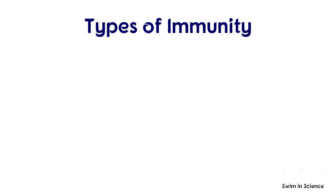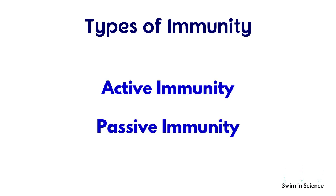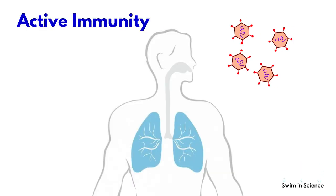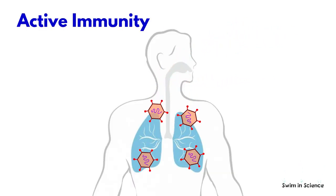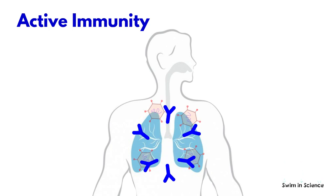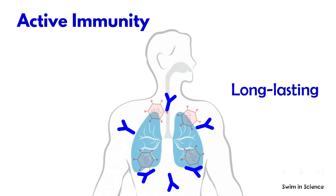There are mainly two types of immunity: active immunity and passive immunity. Active immunity is defined as the immunity that is generated following exposure to a pathogen. It is long-lasting and sometimes lifelong.